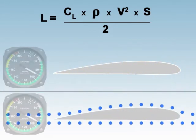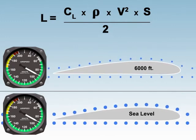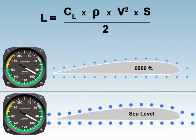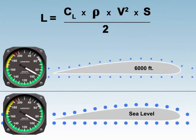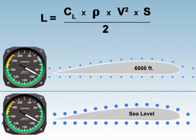We can observe the relationship between the different variables of the lift equation if we consider the same airplane traveling in level flight at 90 knots and compare air flowing over the wing at sea level and at 6,000 feet. From the graphic, we can see that the density of air at 6,000 feet is less than at sea level.